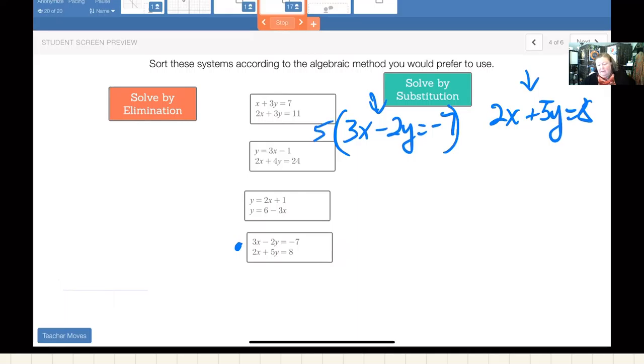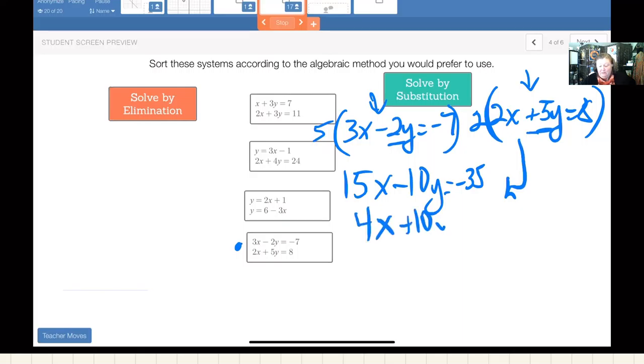Since this is a negative 2y and this is a positive 5y, I'm thinking I'm going to multiply this equation by 5 and this equation by 2 so that I can turn this into a negative 10y and this into a positive 10y. So I would get 15x minus 10y equals negative 35. And I'm going to move this one down underneath so I can just go ahead and subtract right away. This would be 4x plus 10y equals 16.